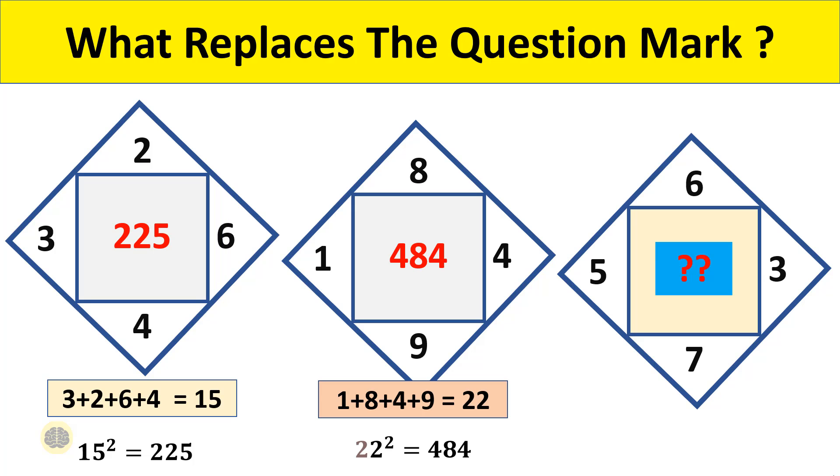With the same logic, in box 3, consider the numbers outside the inner square and add all the numbers: 5+6+3+7 = 21. Now square the number: 21² = 441. So the answer to the puzzle is 441.